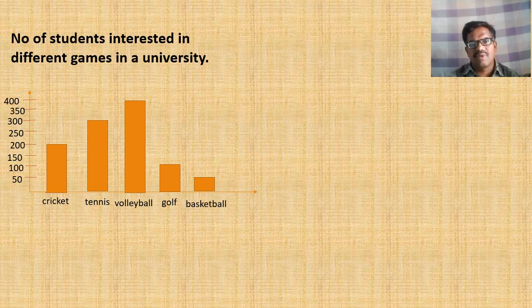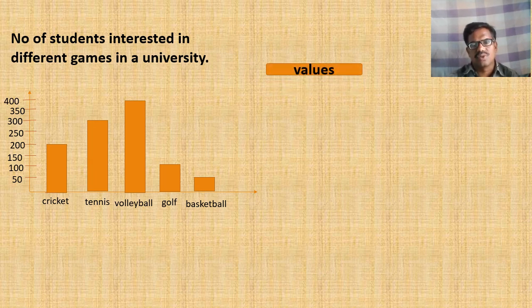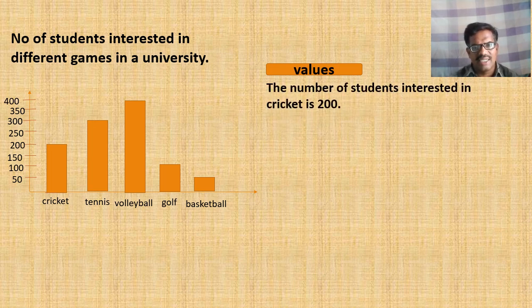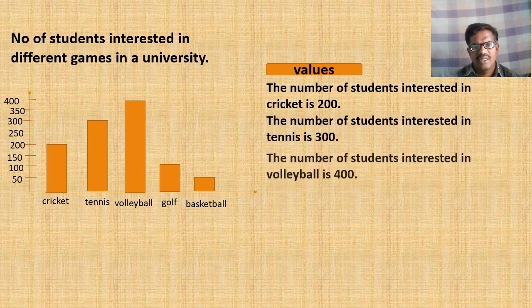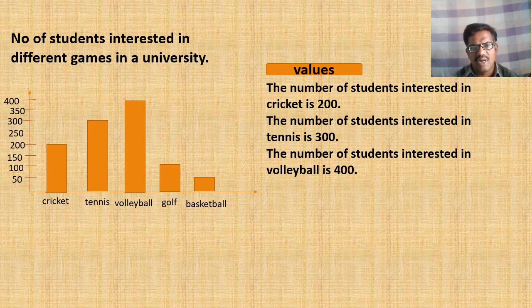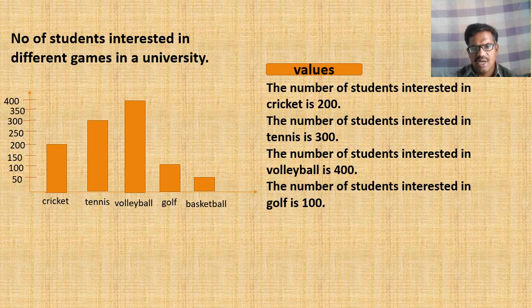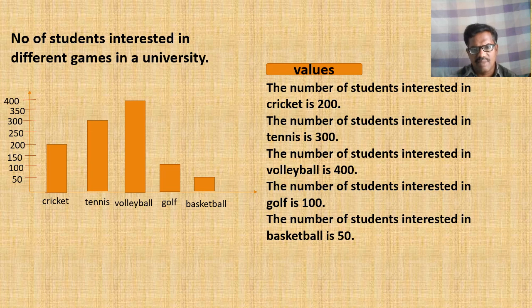As the third paragraph of the description, we can make the students write the values the diagram shows. The number of students interested in cricket is 200. The number of students interested in tennis is 300. The number of students interested in volleyball is 400. The number of students interested in basketball is 50. Looking at the diagram, we can make the students write all the values the diagram shows.